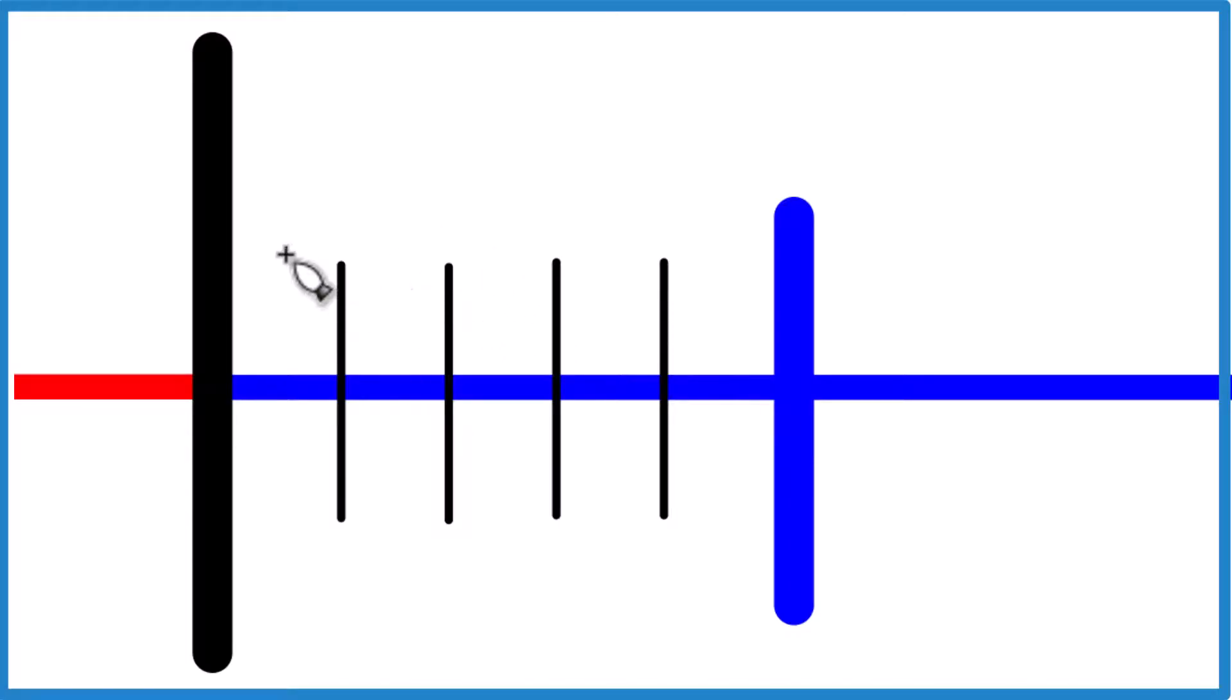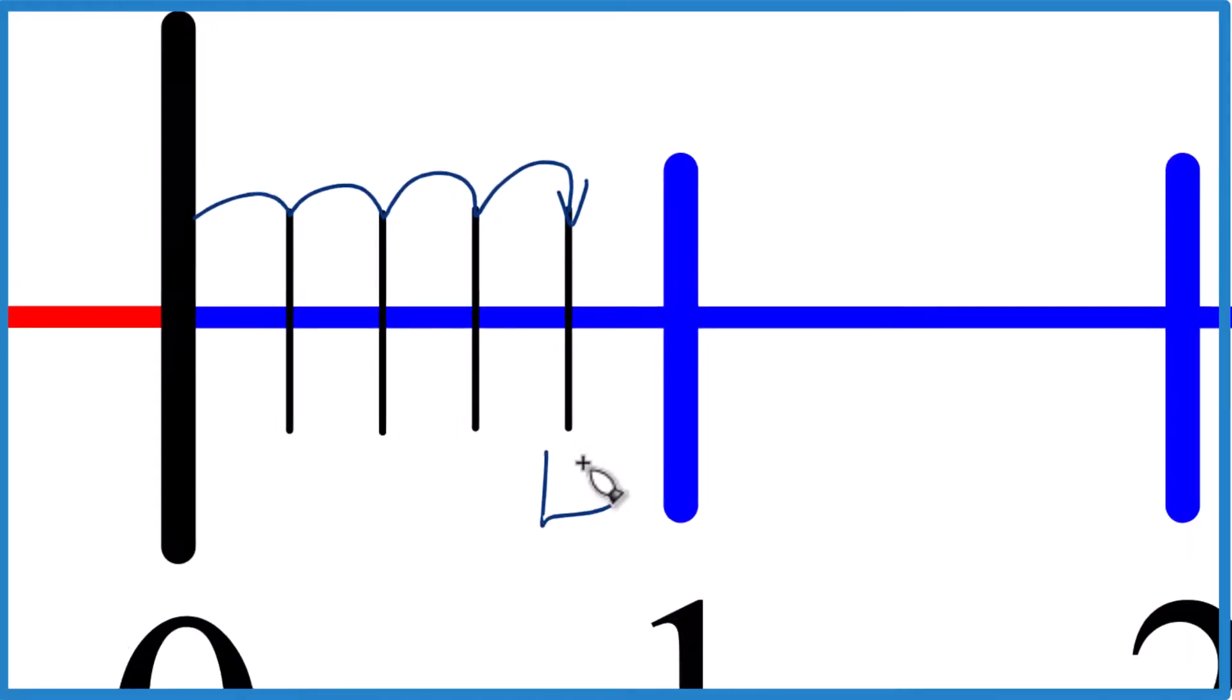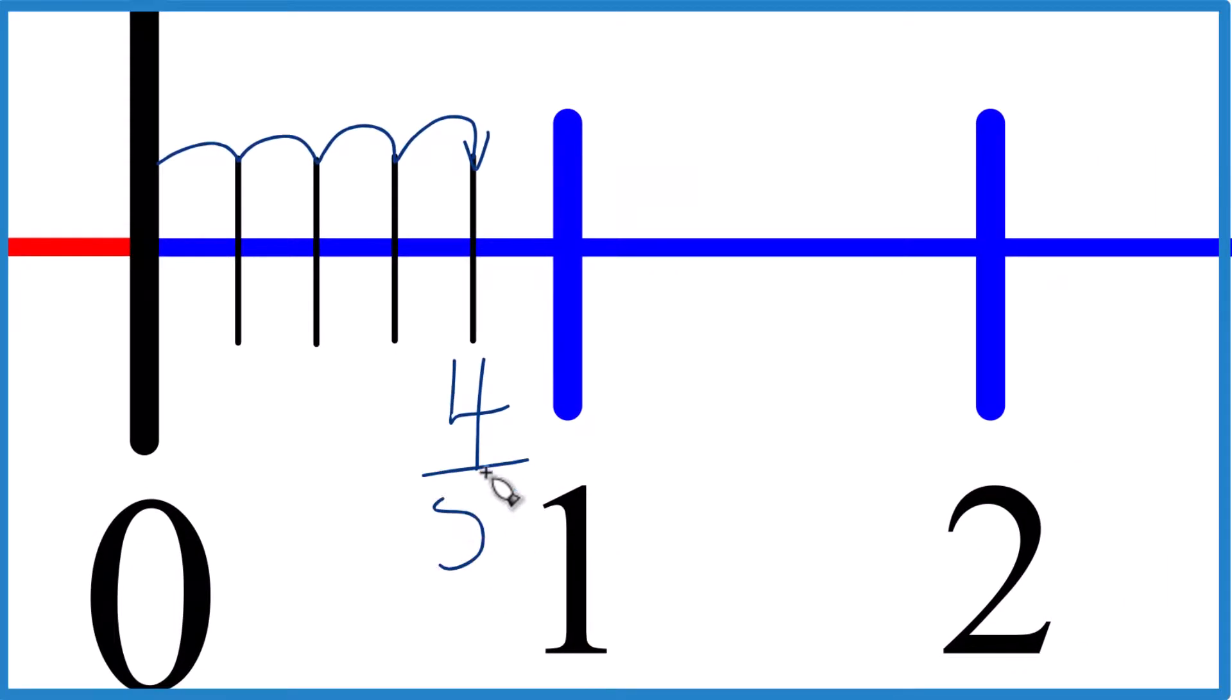So to find four-fifths, we're gonna go over one, two, three, four, right there. That's four-fifths on our number line.